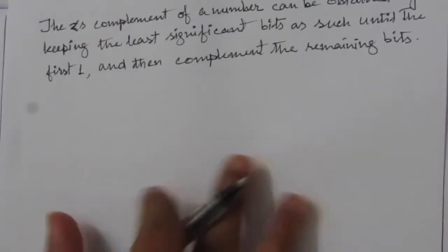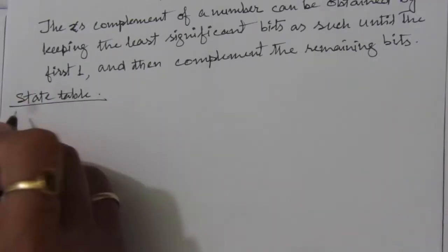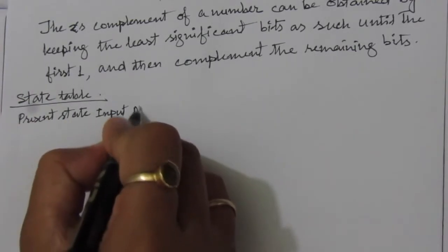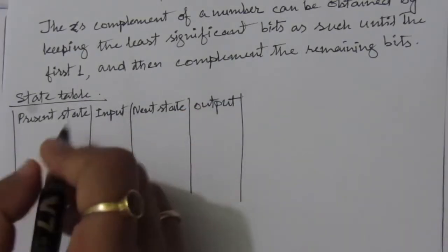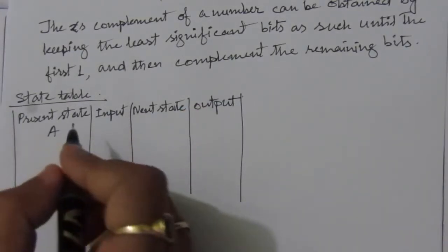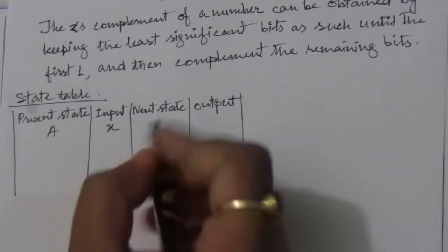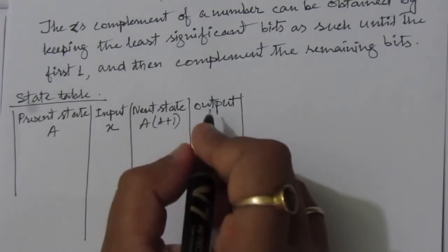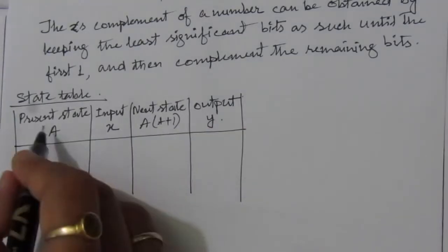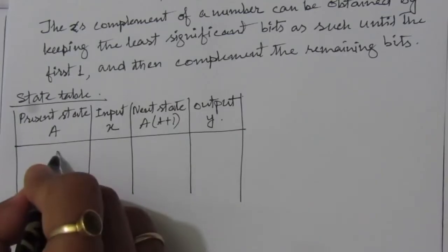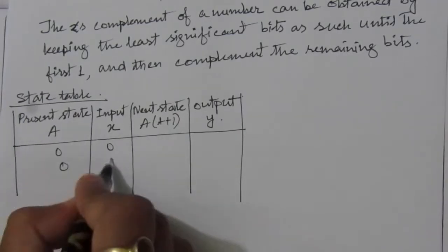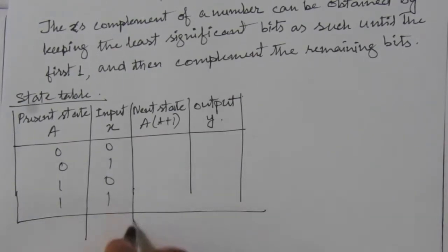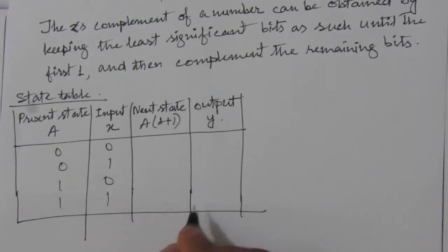Now let us make the state table. The state table will have: present state, input, next state, and output. The present state is denoted by A, the input is X, the next state is A(t+1), and the output is Y. The present state and input combinations are: 0,0 — 0,1 — 1,0 — 1,1. We have to find out the next state and the output for each combination.